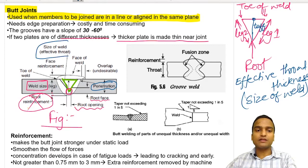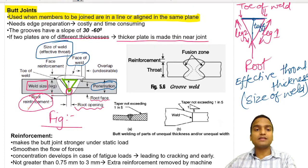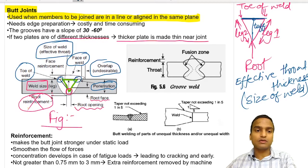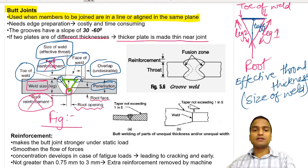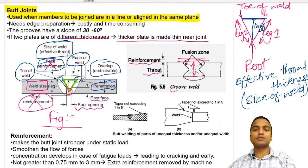The size of weld is also the depth of penetration, also known as effective throat thickness. The exposed side of the weld is called the face of the weld, and the corners are the toe of weld. There is also face reinforcement, just as there is root reinforcement. The throat is the vertical thickness, and the fusion zone is as shown — reinforcement here means the protruding thickness of weld.